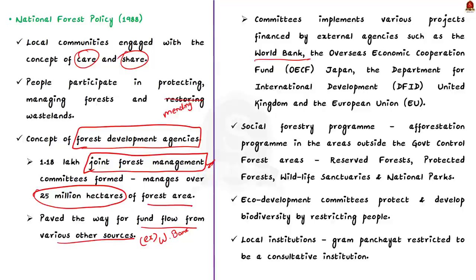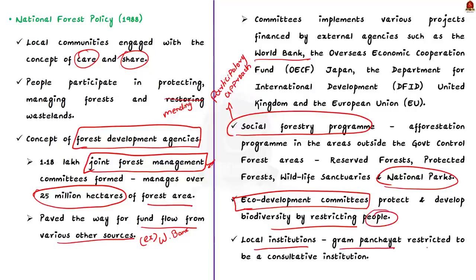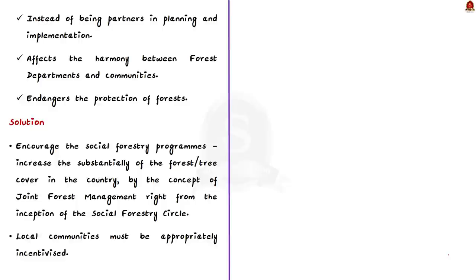The National Forest Policy 1988 also introduced the social forestry program. The main task of the social forestry circle was to carry out afforestation programs in areas outside the government-controlled forest area, which includes reserve forests, protected forests, wildlife sanctuaries, and national parks. In national parks, sanctuaries, and tiger reserves, ecological development committees effectively protect biodiversity, but there are restrictions on local communities. The problem is that local institutions like gram panchayats are restricted to a consultative role instead of being partners in planning and implementation.